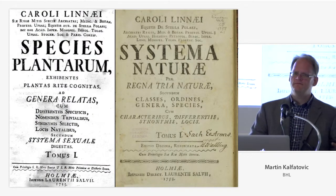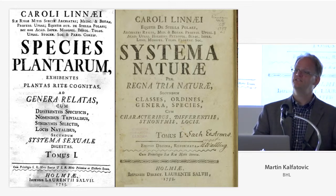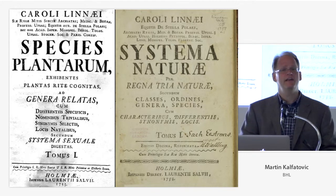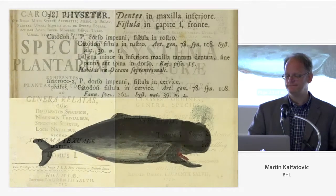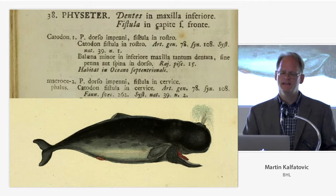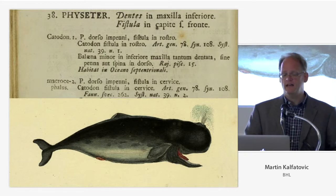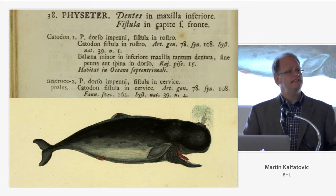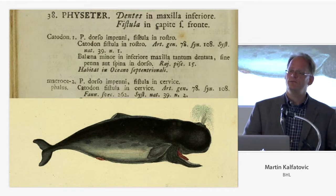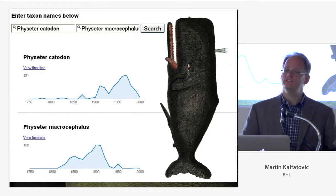The two landmark volumes where he defined this concept are Species Plantarum for plants, published in 1753 — so we're celebrating the 260th anniversary — and Systema Naturae, where he added the rest of the animal and mineral kingdoms. But there's a problem because the different ways that names change over time causes difficulties when you annotate these texts. Here is the sperm whale as described by Linnaeus — the top name is Physeter catodon, and the lower name is Physeter macrocephalus. Linnaeus thought these were two separate species.